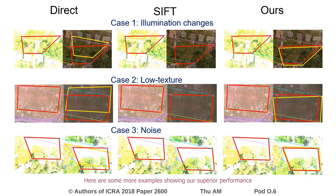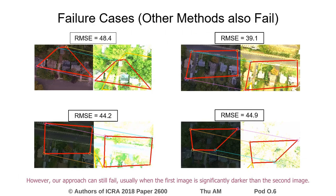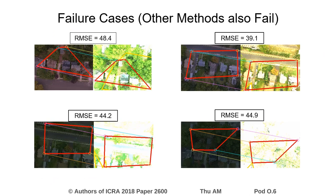Here are some more examples showing our superior performance versus the traditional methods in an aerial image dataset. However, our approach can still fail, usually when the first image is significantly darker than the second image. A potential solution could be to apply a left-right consistency in the loss function.